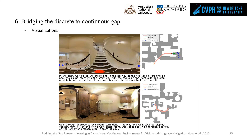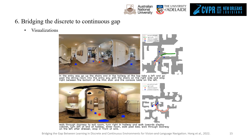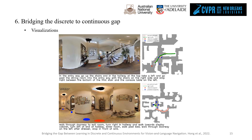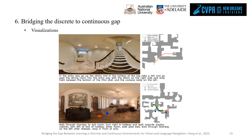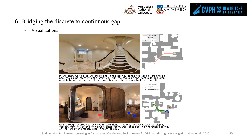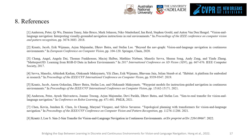Finally, here are some visualizations. All cylinders represent the predicted waypoints and the red cylinders are the selected waypoints. Agents move towards the selected waypoints through low-level controls to reach the target. Thanks for your interest in our work. Please refer to the paper and the project webpage for more details. We hope that this work can encourage future VLN research in more realistic continuous environments and serve as a step towards VLN in the real world. Thank you.